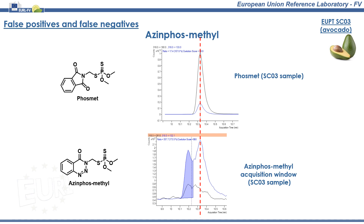It stands to reason that the laboratory which reported the false positive for azimphosmethyl found a better peak shape when using slightly different mass transitions during analysis. Nevertheless, these two compounds, which are quite similar and elute close to one another, may give rise to interferences in the other's acquisition window. So, care must be taken when reporting them.